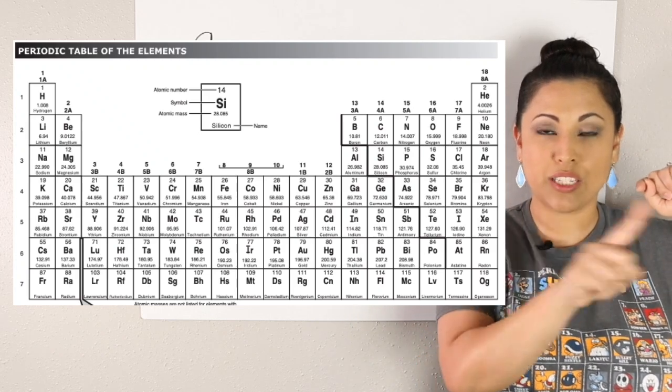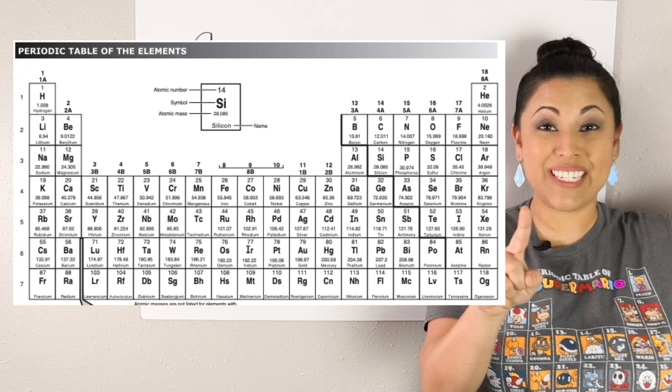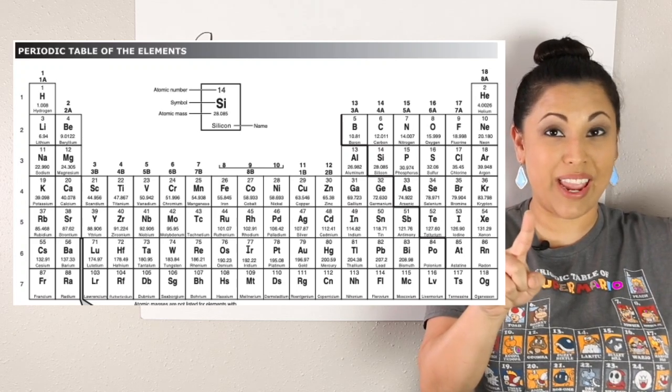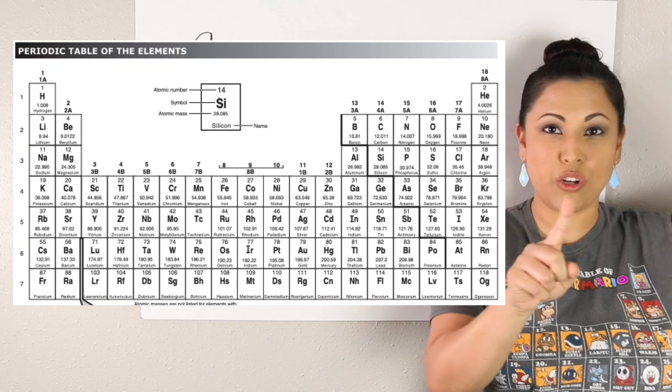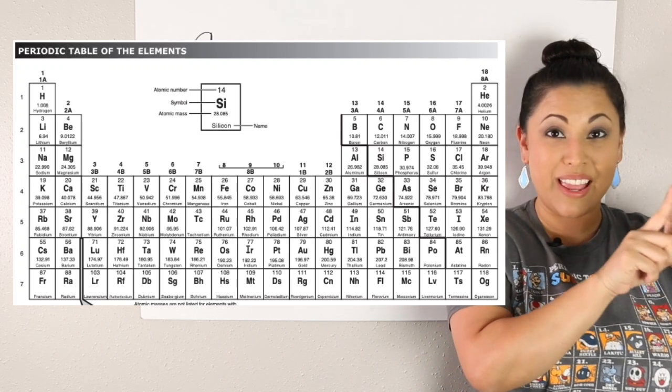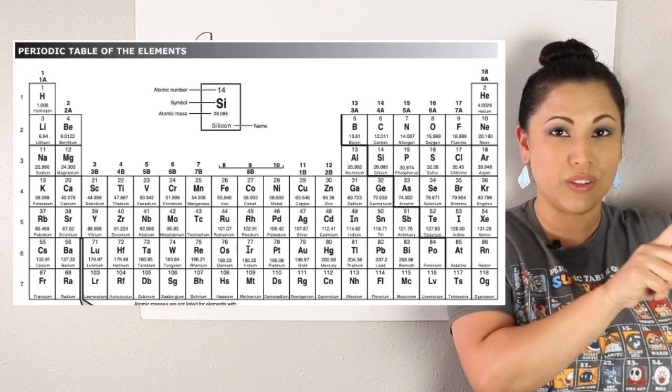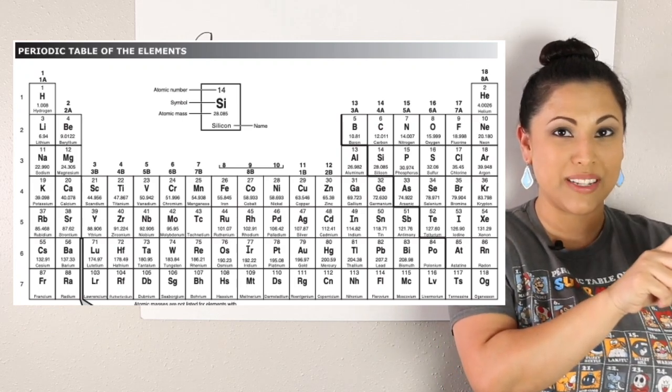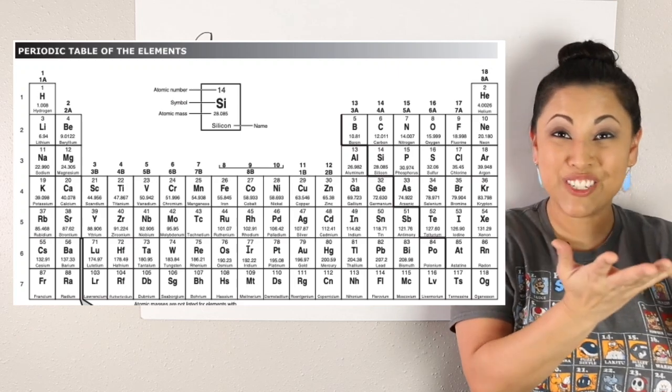Two going across, period two, and group 15, because that has 5A, which is five valence electrons. Then you're going to go across and over to find that element. Which element has two energy levels and five valence electrons? Did you find it? Nitrogen! Good job!